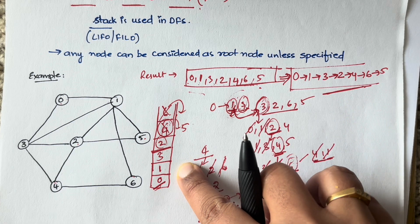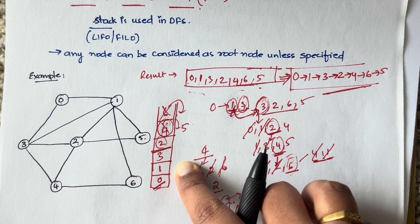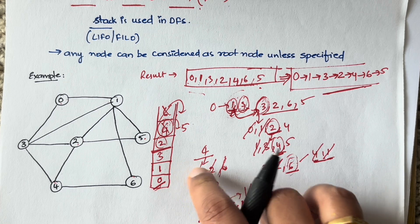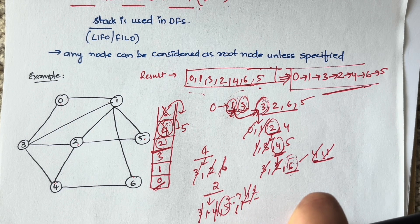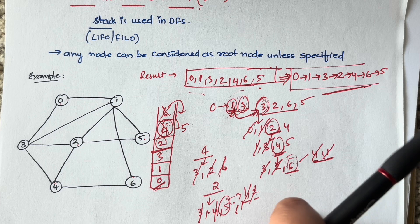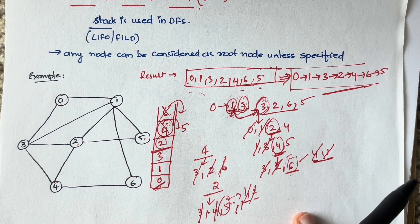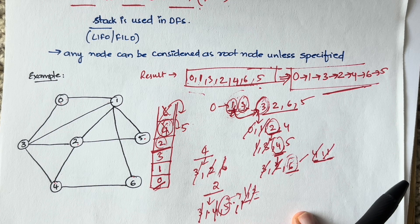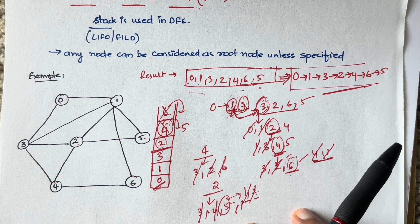This traversal order could be different for different people because in the first iteration, among one and three, I picked one — if you pick three first, the order will be different. But the concept is the same. For DFS you use a stack; for BFS you use a queue. That is the only difference between these two graph traversal techniques. If you have any questions, leave them in the comments, and let me know if you'd like videos on other topics.